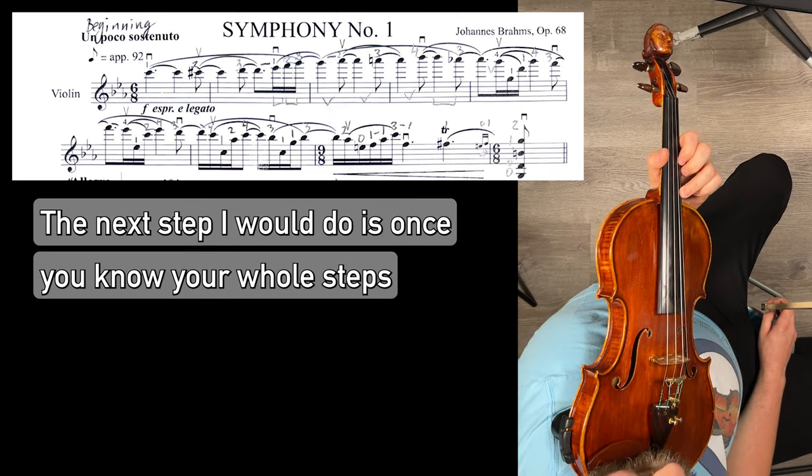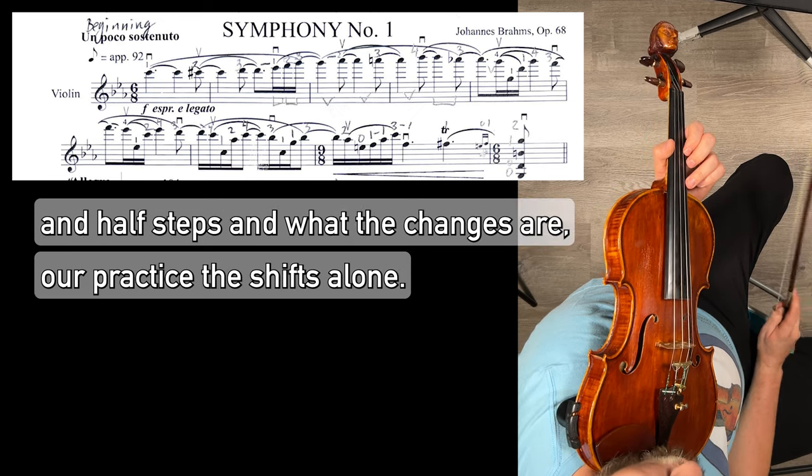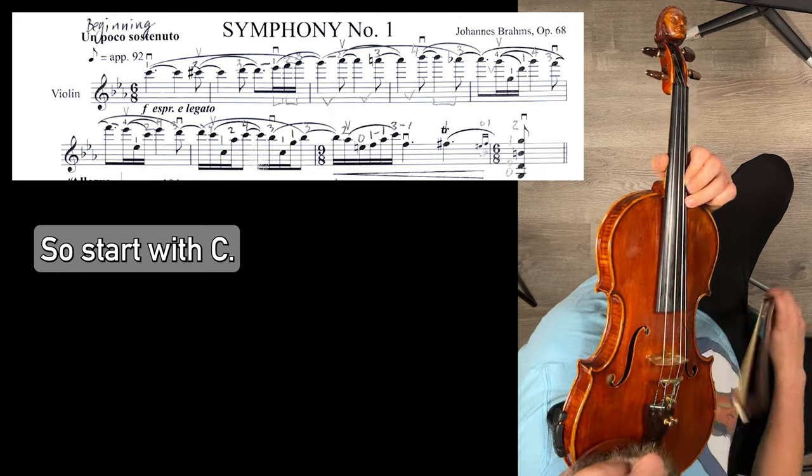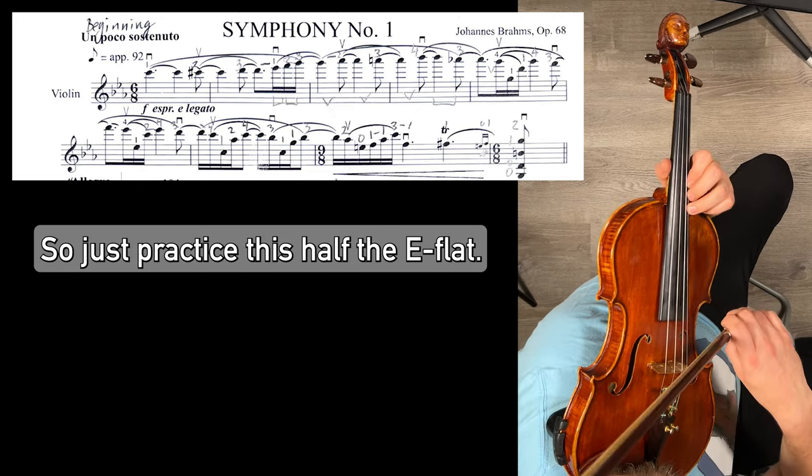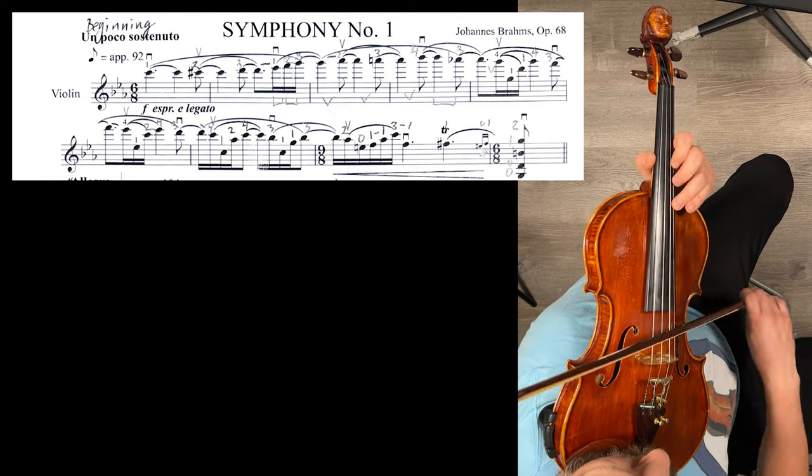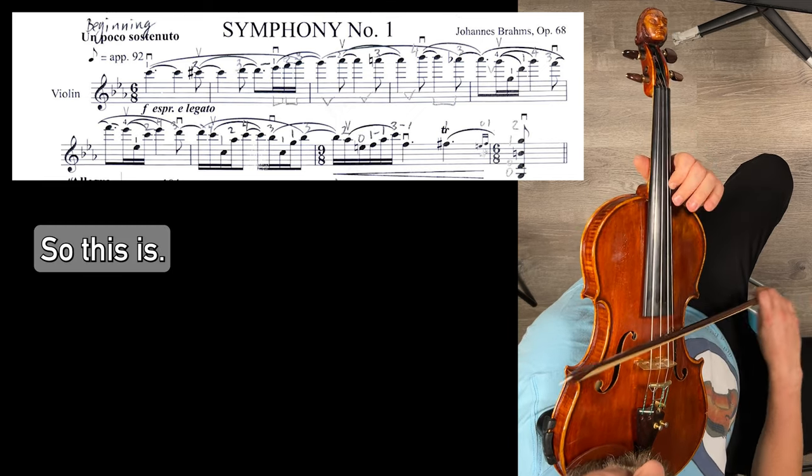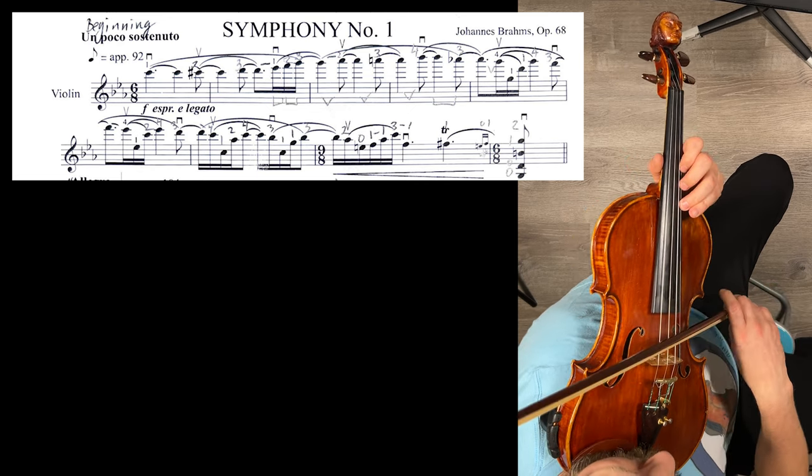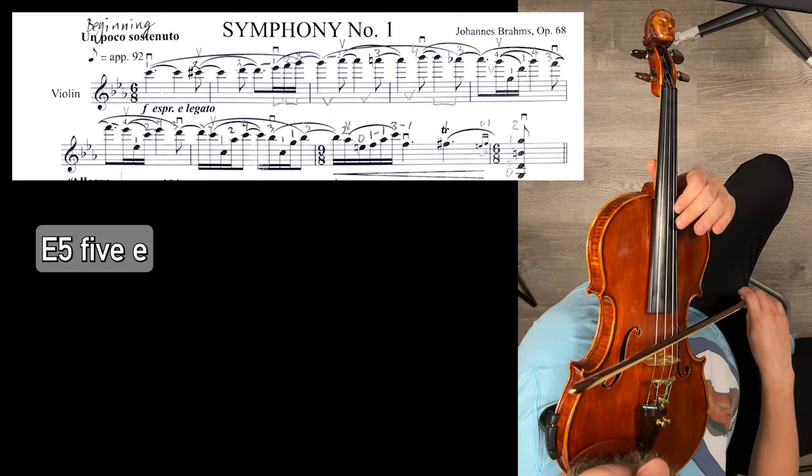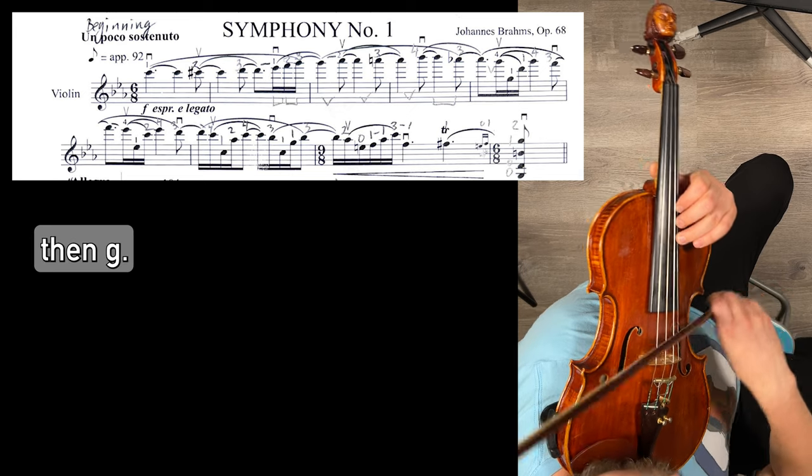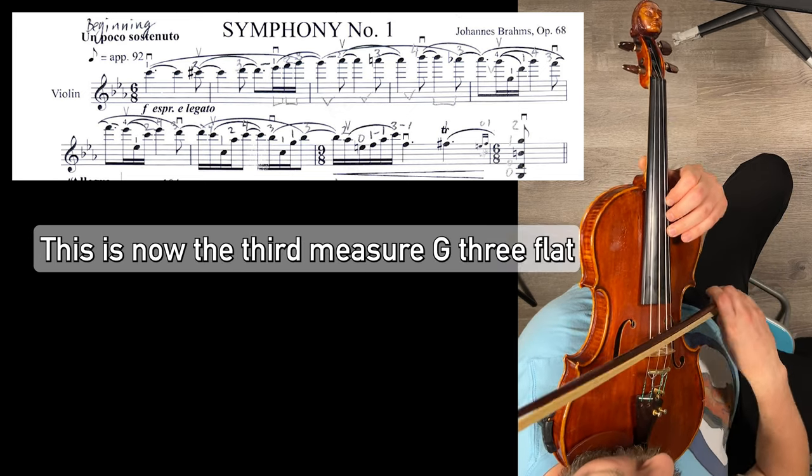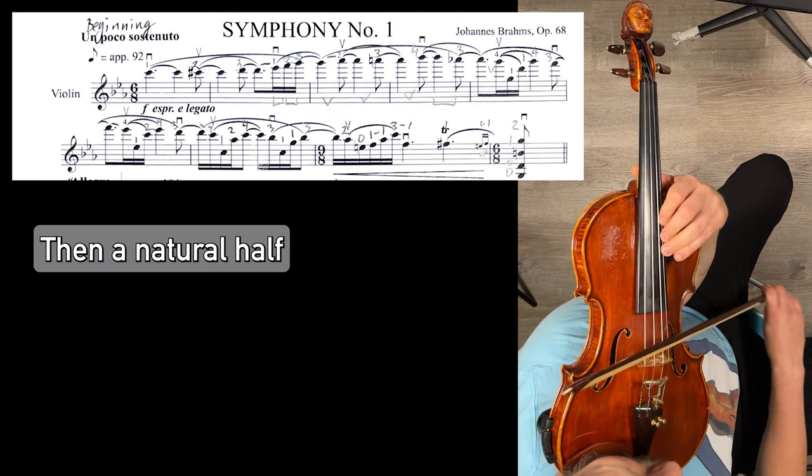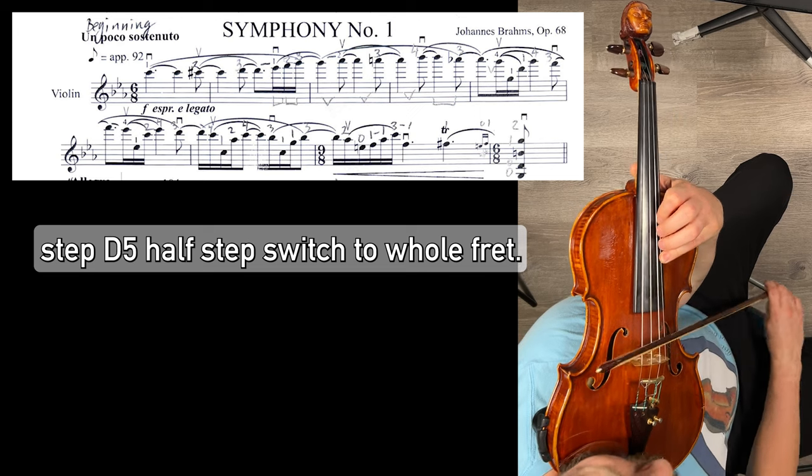The next step I would do is once you know your whole steps and half steps and what the changes are, I will practice the shifts alone. So start with C. So just practice those half steps. D to E flat. So this is fifth position, fifth to seventh. D, E flat, E. Then G. This is now the third measure. G, A flat, half step shift. Then A natural, half step. B flat, half step. Switch to whole step.